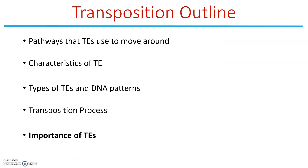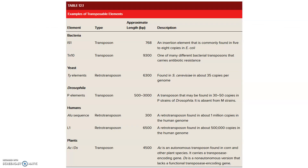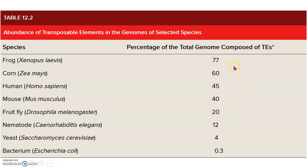Why do transposable elements exist? Honestly, we don't fully know. We do know they're found across many organisms: transposons in bacteria, retrotransposons in yeast, transposons in Drosophila, retro in humans, and simple transposons in plants. In terms of abundance, 77% of the frog genome is made up of transposable elements, compared to 0.3% in bacteria, 4% in yeast, and about 45% in humans. This suggests more complex eukaryotes tend to have more than prokaryotes.